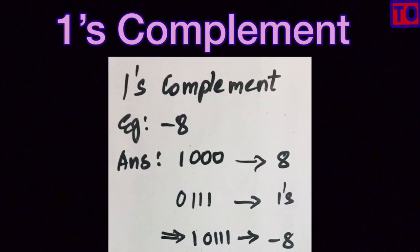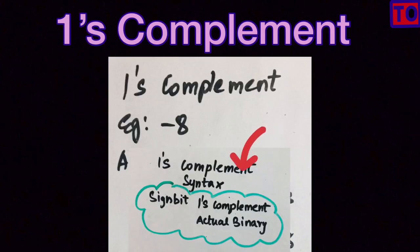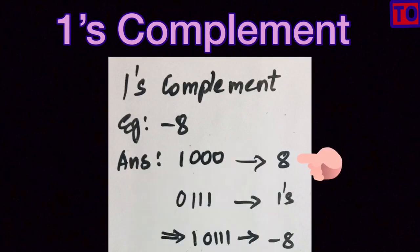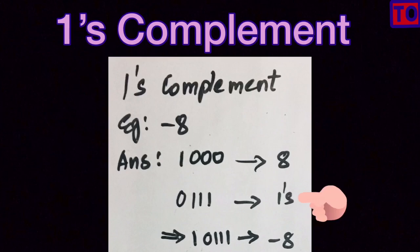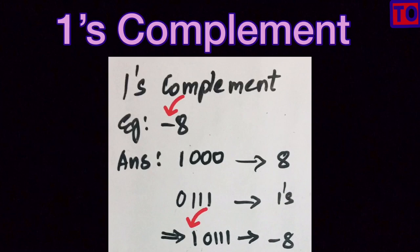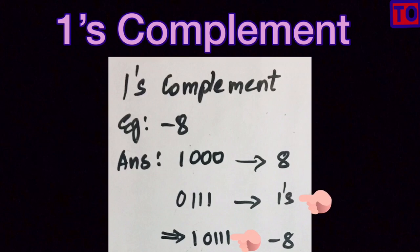Let's take an example of One's Complement. The question is to find the One's Complement of minus 8. If you have minus 8, the syntax is: Sign Bit, then the One's Complement of the Actual Binary. The actual binary of 8 is 1000. The One's Complement of 1000 is 0111. The sign bit for minus is 1, and for plus is 0. So for minus 8, the sign bit is 1, and the One's Complement is 0111. The answer for minus 8 is 1, 0111.